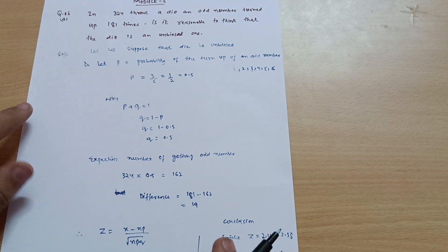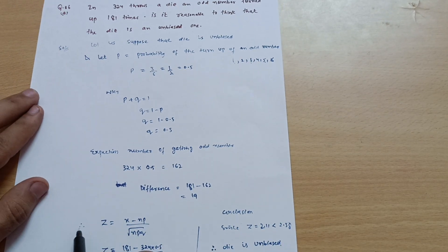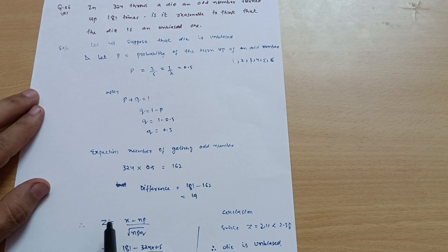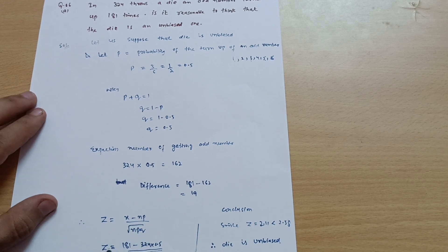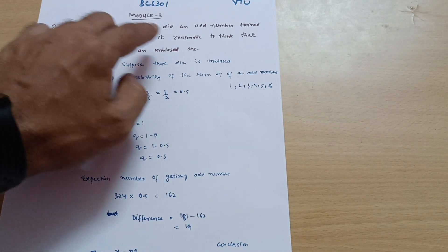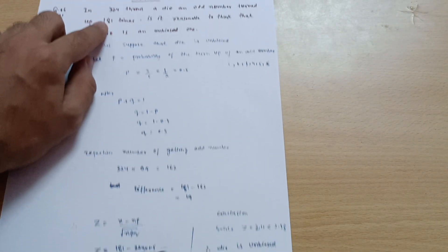Now as usual you have to use the formula for z in order to check the biased or unbiased one. z is equal to (x minus np) divided by root of npq. It is the formula.